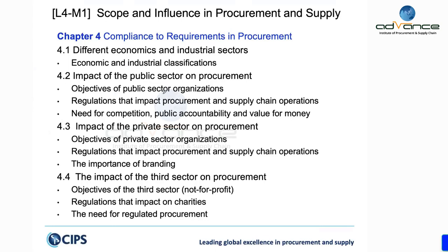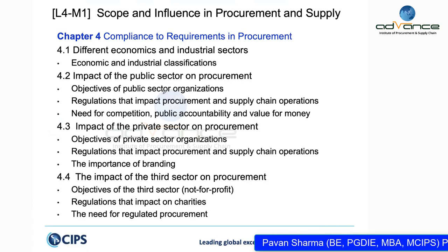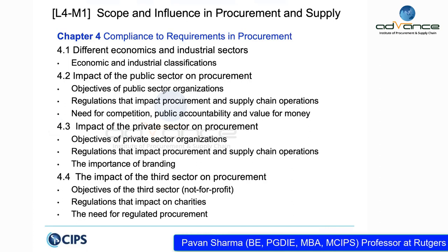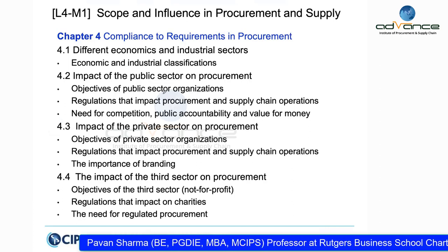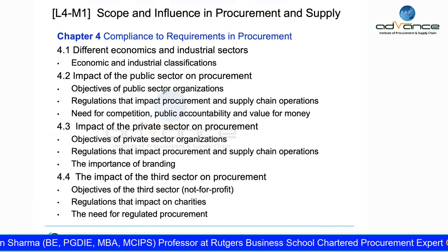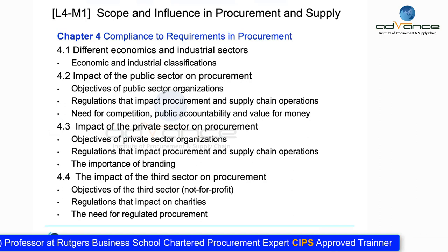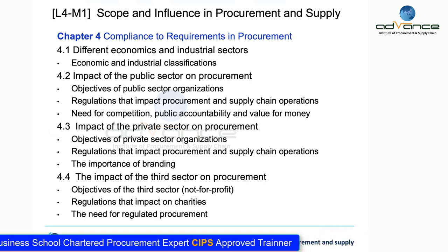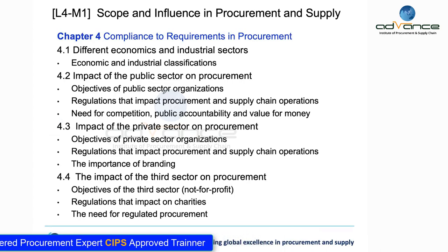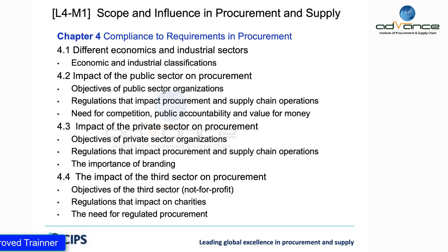We look at different kinds of economy — primary sector, secondary sector, tertiary sector. We look at different types of organizations and different types of businesses: maybe private sector, public sector, and third sector. We look at sole proprietorship, private limited companies, public limited companies, and then public sector procurement objectives, private sector procurement objectives, third sector procurement objectives, and the influence of these objectives on the procurement function.